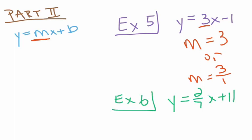For a second example, y equals two-sevenths x plus 11. Whatever number is in front of the x term is our value for slope, so m equals 2 over 7. If there were a negative sign in front of the x term, our slope would be negative as well. That's our lesson for 3.2c — finding rate of change from a table and from an equation. Write down any questions and we'll go over those together in class.